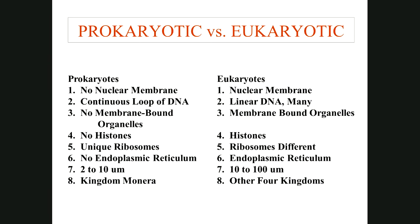Prokaryotes are quite small — 2 to 10 micrometers — so you need 1000x magnification to see them well. Eukaryotes are 10 to 100 micrometers; 400x magnification is usually sufficient. Prokaryotes belong to the kingdom Monera, now split into two domains: Bacteria and Archaea. The other four kingdoms — Animalia, Plantae, Fungi, and Protista — are all in the domain Eukarya.